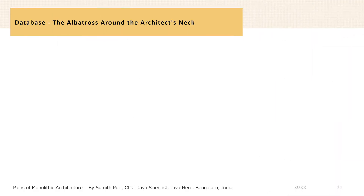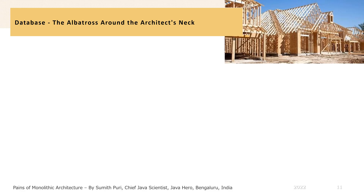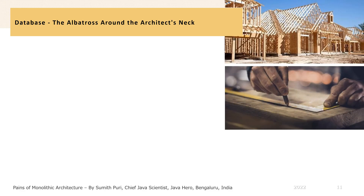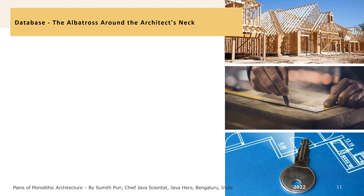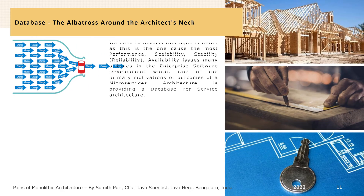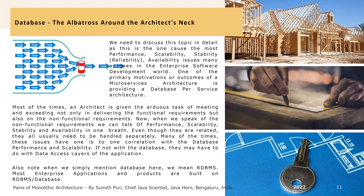This next topic is the one that usually causes the most performance, stability, scalability, availability and reliability issues in enterprise software — it is the database. Most of the times, an architect is given the arduous task of meeting and exceeding not only the functional requirements but also the non-functional requirements. When we speak of non-functional requirements, we usually talk of performance, scalability, stability and availability in one breath. Even though they are related, they all usually need to be handled separately.